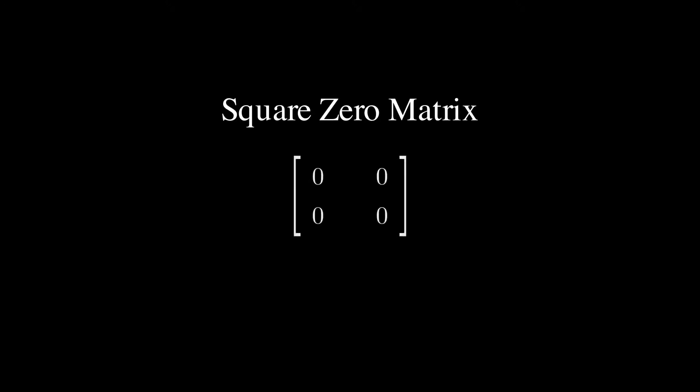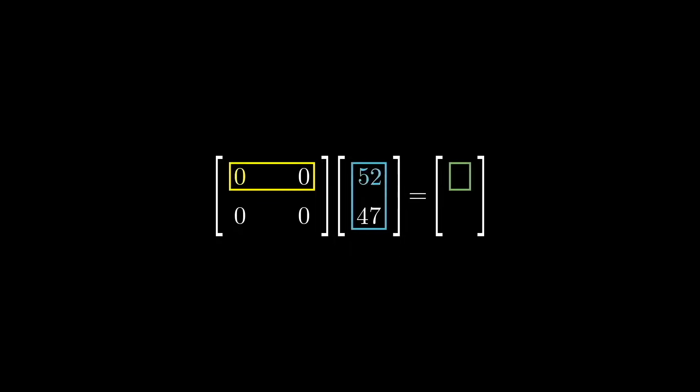The next one is a zero matrix, which is square, and everything is zero. So, regardless of which vector you multiply with the zero matrix, it becomes the zero vector. And visually, it would mean, no matter where the vector starts, it would move towards and end up in the origin.